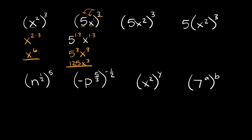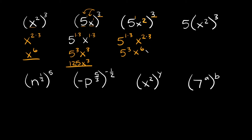Now this next example: we have 5x squared in parentheses, raised to the third power. Again, you're going to apply the exponent to everything inside of the parentheses. The 5 is 5 to the first power, and x is raised to the 2. So we get 5 raised to 1 times 3, and x raised to 2 times 3. Simplifying: 5 cubed is 125, and x to the 6th power. So your simplified answer is 125x to the sixth.